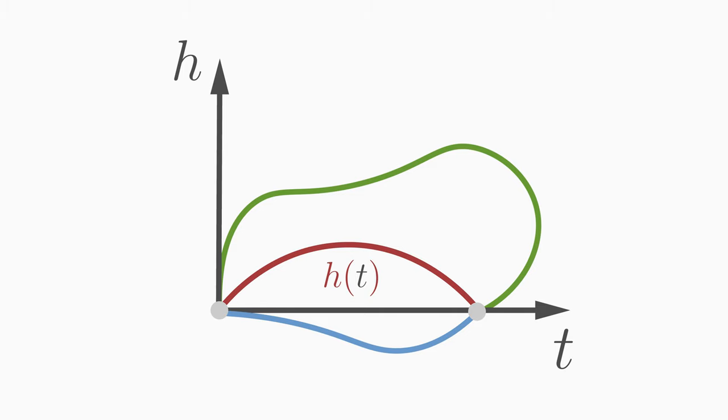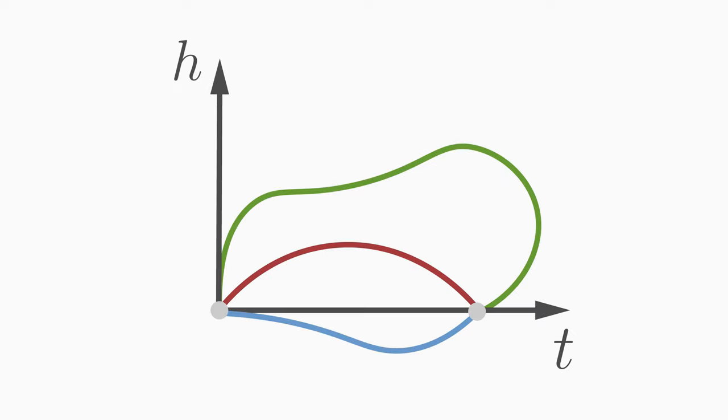To be able to answer this question, we need a quantity called action, which is abbreviated with the letter S. We can assign an action value to each of these conceivable paths. The action takes a whole function h in the argument and spits out a number, namely the value of the action for the corresponding function h.